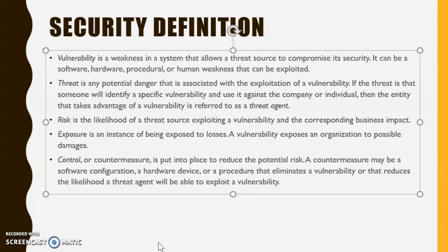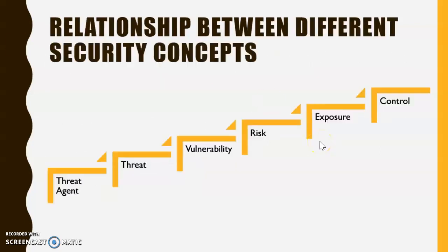Now I want to discuss the relationship between these concepts using another example. Suppose a person travels to their office by two-wheeler. Their office is in a crowded place, the distance takes about 30 minutes, there is heavy air pollution, and there is traffic. Let's try to understand all the terms — threat agent, threat, vulnerability, risk, exposure, and control — using this scenario.